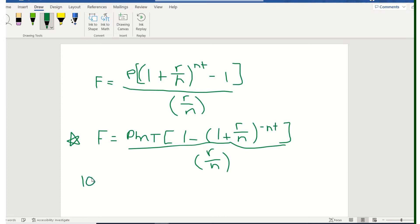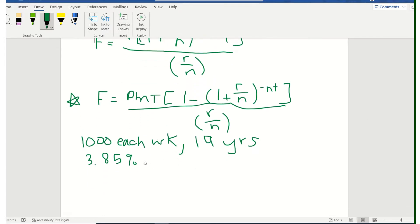So I'm going to write down this information. She's going to hopefully have a payment of $1,000 each week for 19 years. She's going to invest at 3.85% interest compounded weekly.